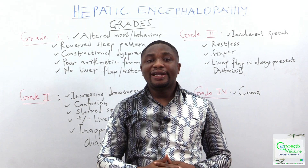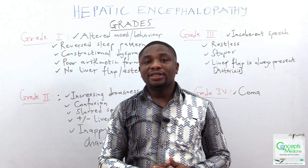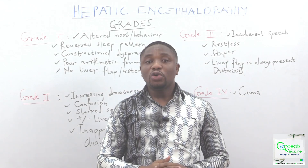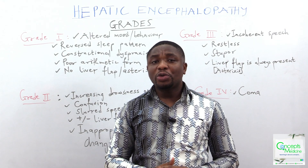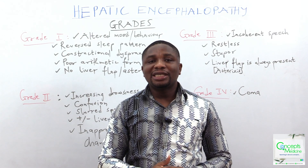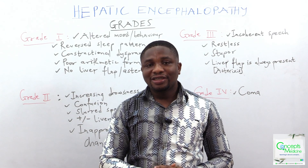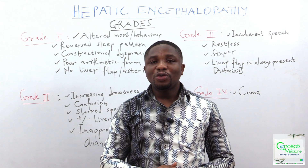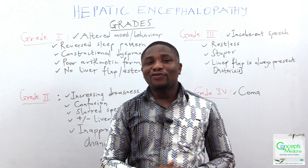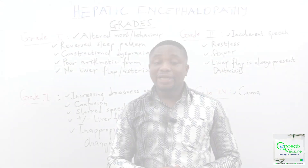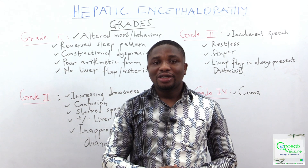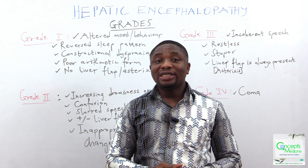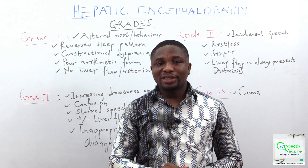Let's move ahead and look at the grades of hepatic encephalopathy. You should know that there are four grades: Grade 1, 2, 3, and 4. The higher the grade, the worse the prognosis. So let's begin with Grade 1.